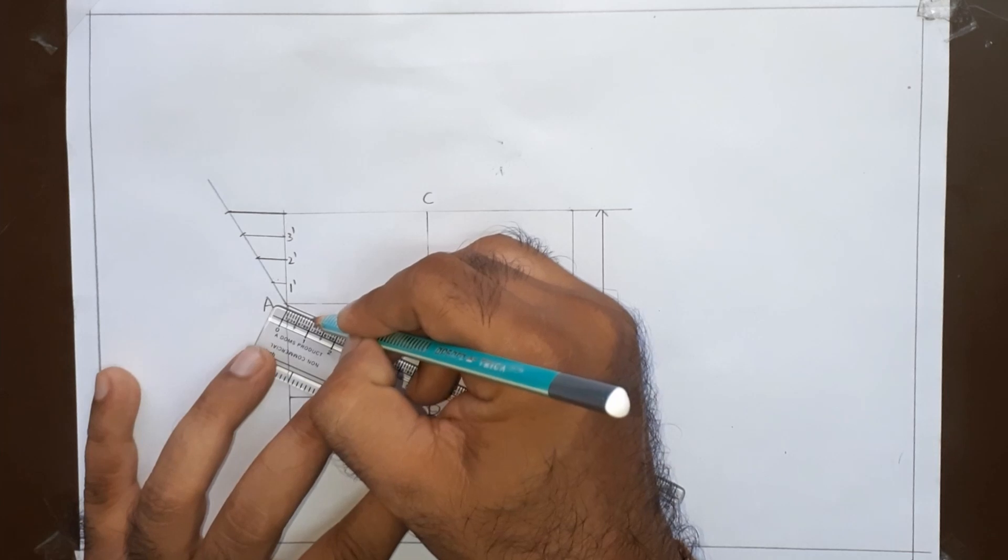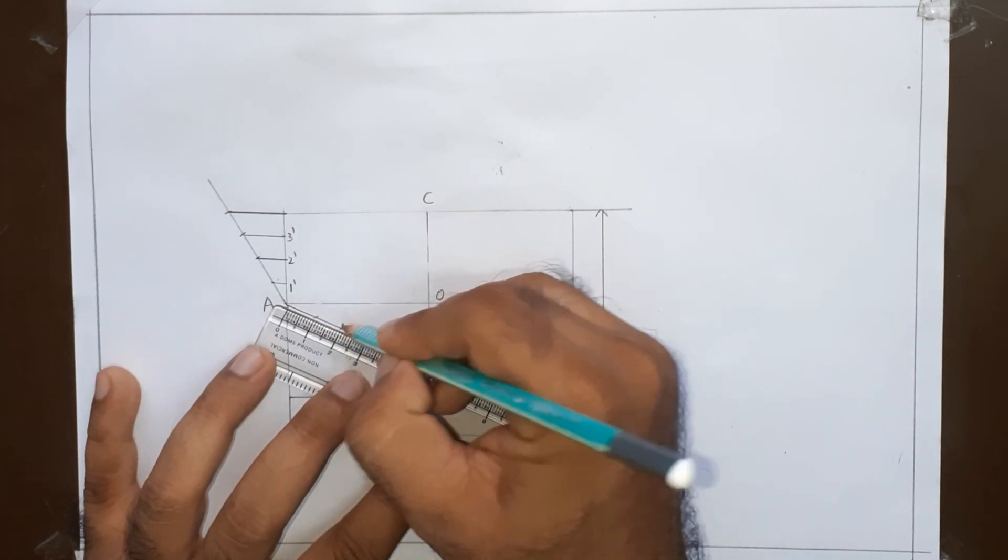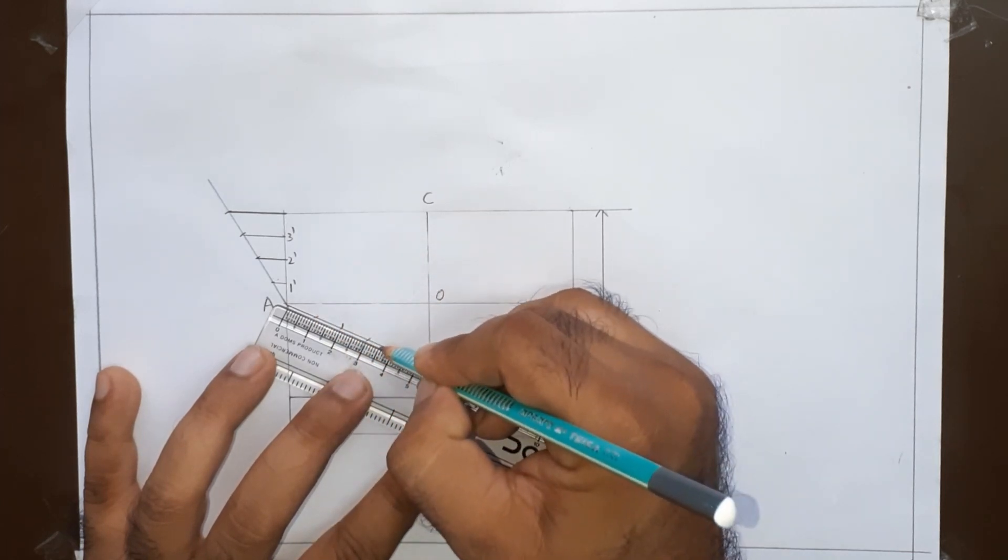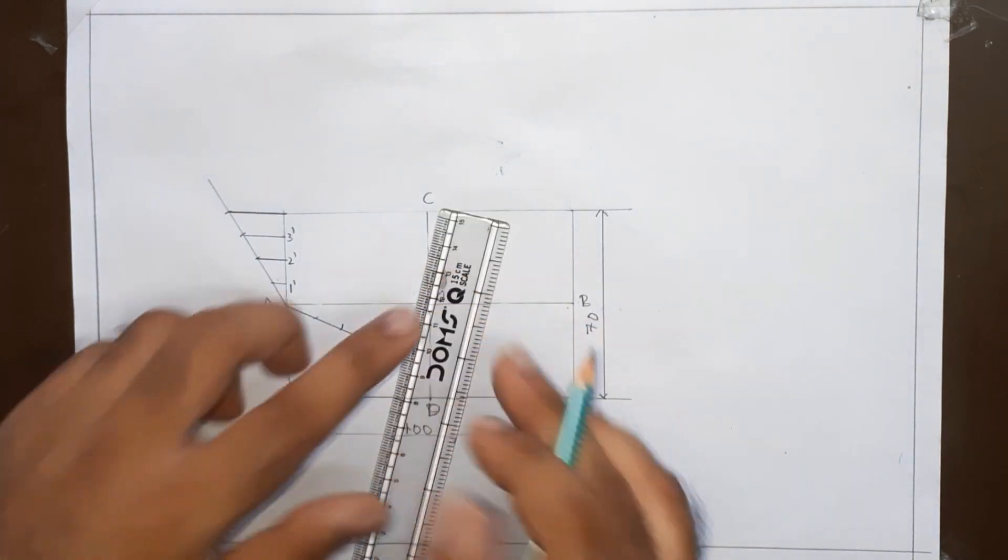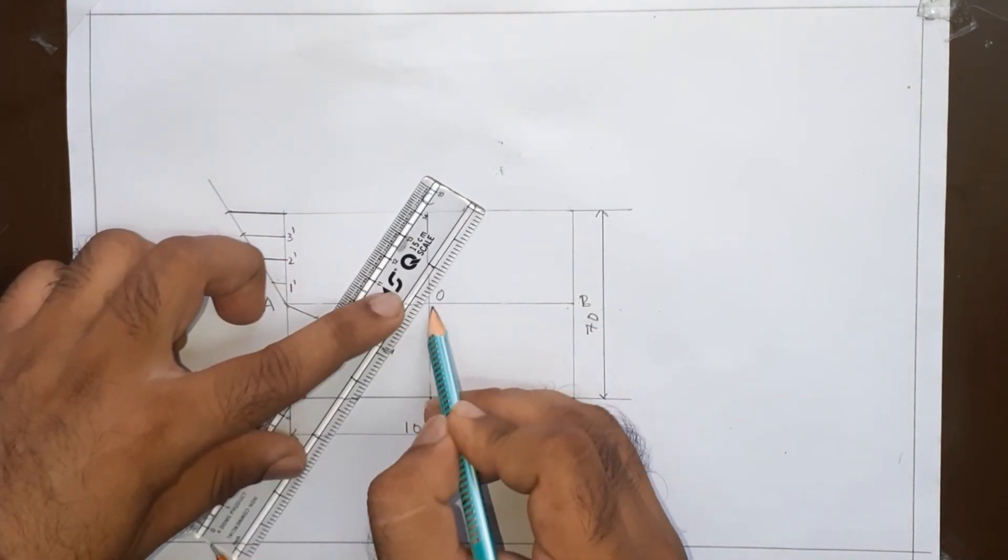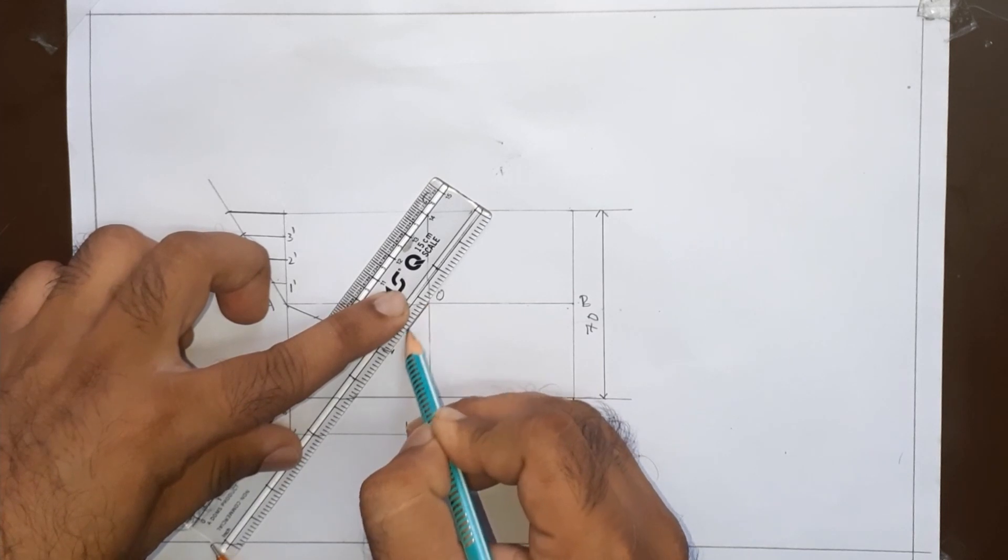Then divide this into 4 points of 10 mm each. This is 1, 2, 3 and 4.